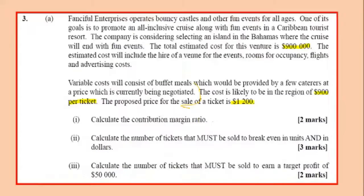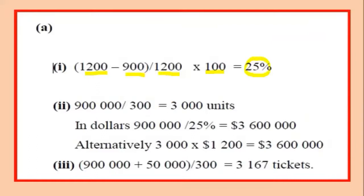Next, we need the number of tickets that must be sold to break even in units and dollars. The breakeven point is fixed cost divided by the contribution. We calculated contribution as 300, so 900,000 divided by 300 gives us 3,000 units to break even. In dollars, we multiply 3,000 by 1,200. Alternatively, take the fixed costs divided by the contribution margin ratio calculated above.